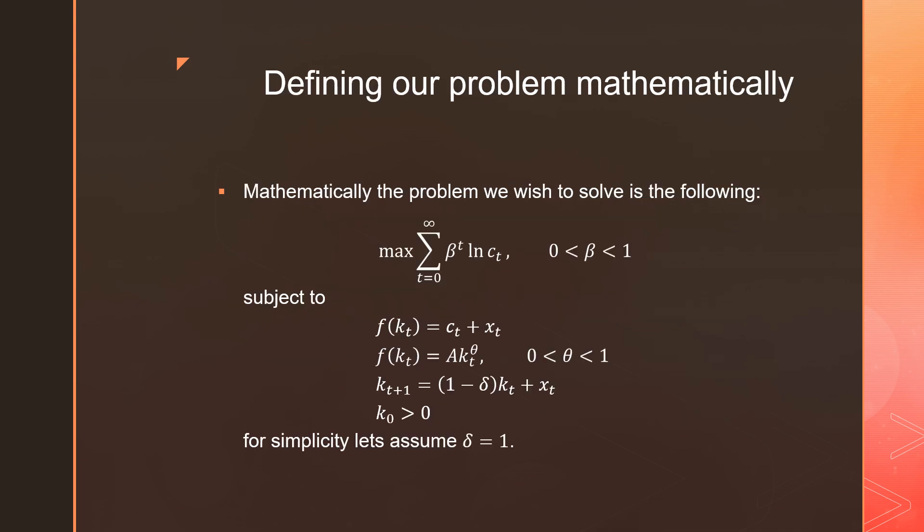So mathematically, the problem we wish to solve is the following. Over here we have our lifetime utility function, which we want to maximize. This is a discounted log utility from consumption. And we subject that to the resource constraint, our technological constraint, which is denoted by this Cobb-Douglas shape here, and our law of motion, assuming that our initial capital stock k0 > 0. And for simplicity, though we can consider cases which are not so, we're going to assume that δ, or our depreciation rate, equals one.